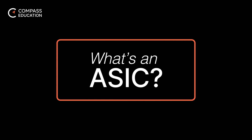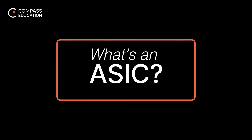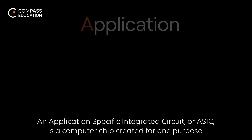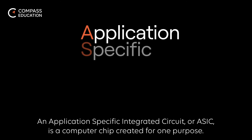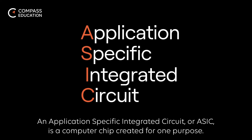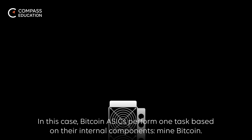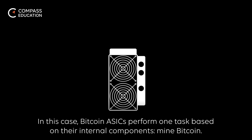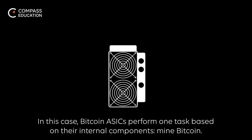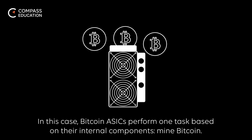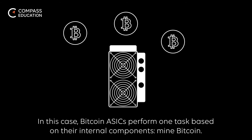What is an ASIC? An application-specific integrated circuit, or ASIC, is a computer chip created for one purpose. In this case, Bitcoin ASICs perform one task based on their internal components: mine Bitcoin.